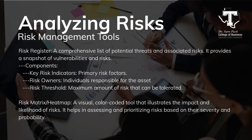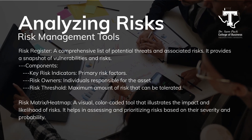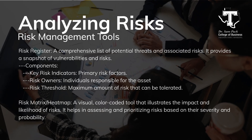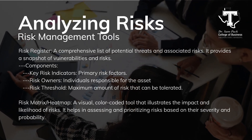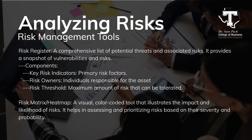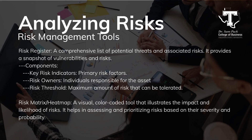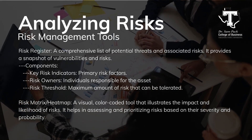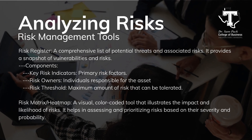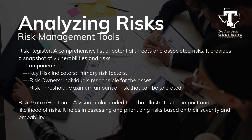A risk register is a comprehensive inventory of all potential threats and associated risks. It provides a clear snapshot of vulnerabilities and helps you keep track of key risk indicators — the primary factors that could lead to risk — risk owners, and the risk threshold, which is the maximum amount of risk your organization is willing to tolerate. Additionally, a risk matrix or heatmap is a visual tool that helps you quickly assess the impact and likelihood of different risks, using color coding to make it easy to see which risks are more severe and need immediate attention.